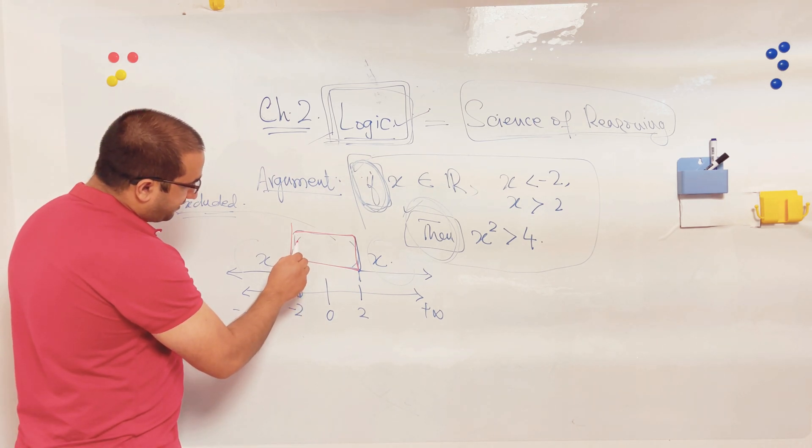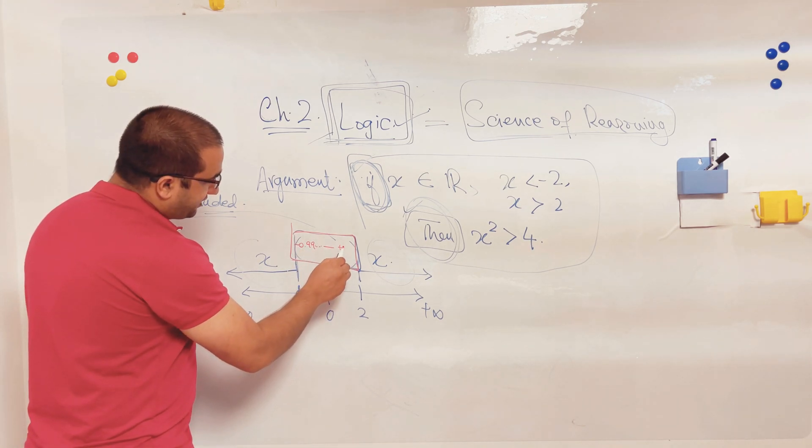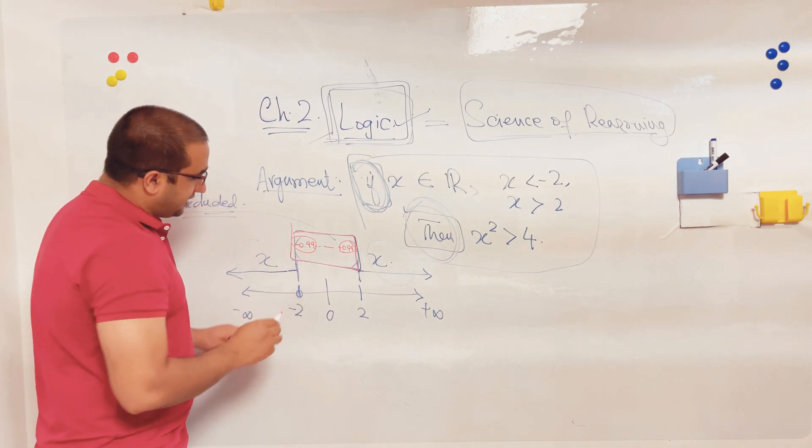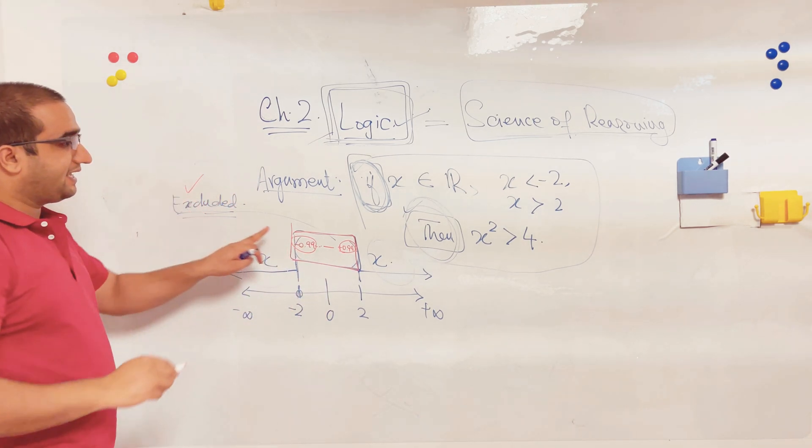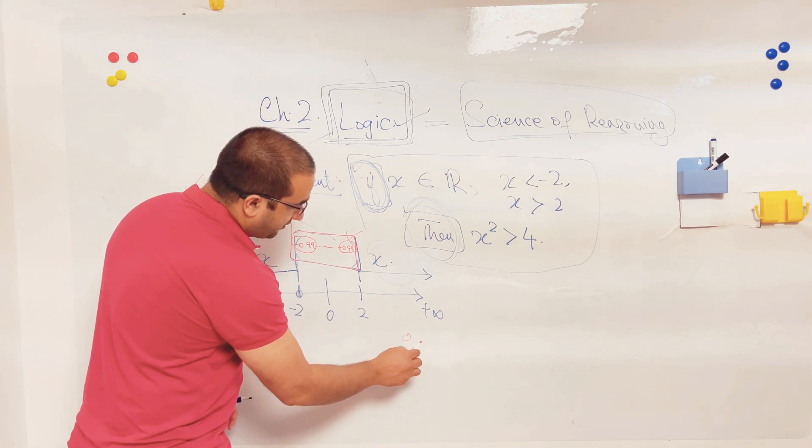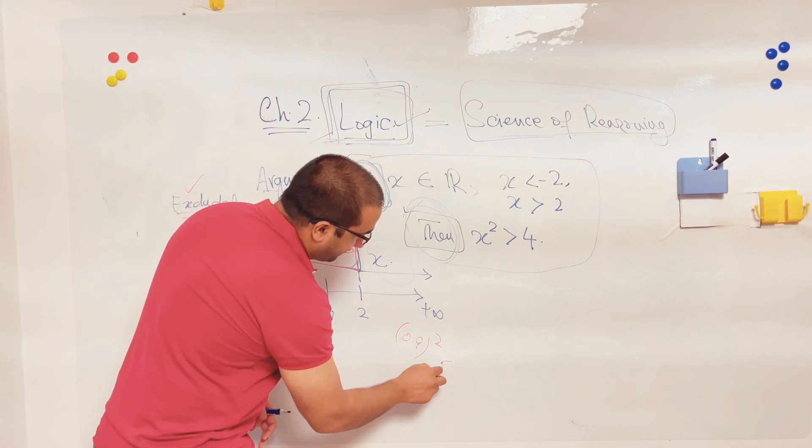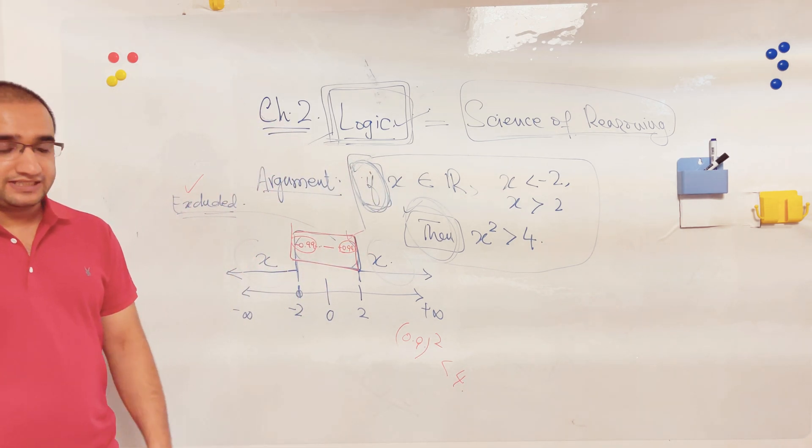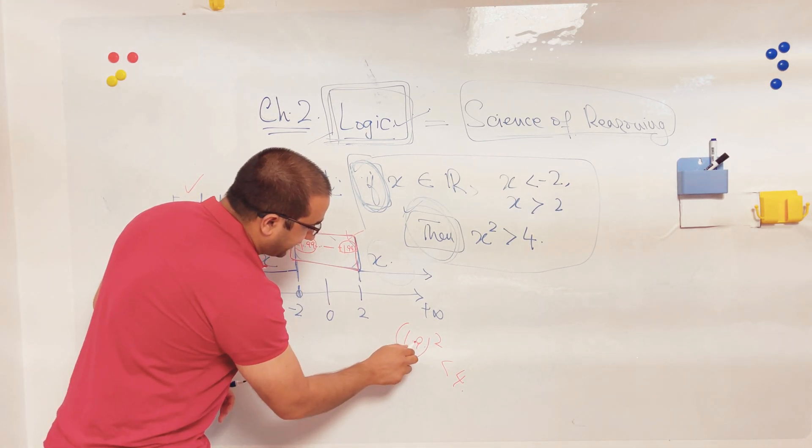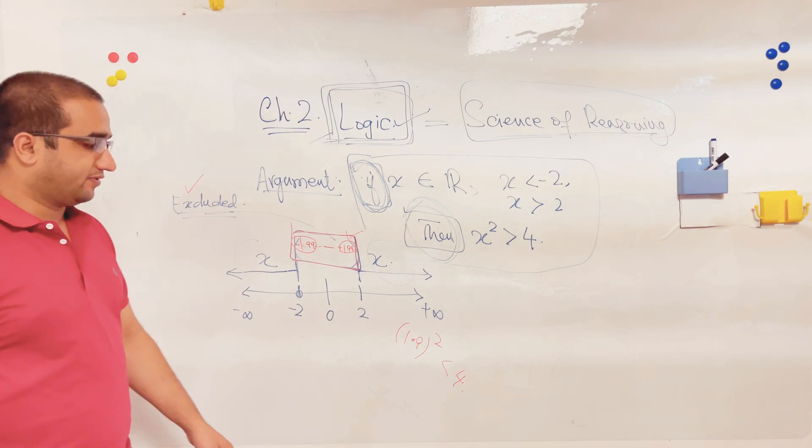This region contains values from negative 0.999 and so on to positive 0.999 and so on. These two are the last peak values of this region which I have excluded from my argument. If I pick any peak value which is the final value of the region, 0.9... sorry, 1.9, not 0.9. This is negative 1, it will be 1.9. If you take the square of 1.9, it will never give you a value equal to 4 or greater than 4. It will be less than 4. Therefore...